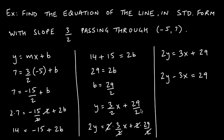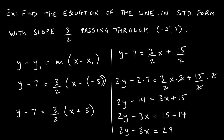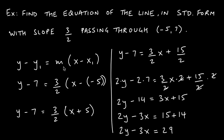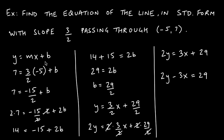To convert to standard form, move 3/2 x to the left to get y minus 3/2 x equals 29/2. Multiplying all three terms by 2 clears the fractions, giving 2y minus 3x equals 29 — exactly the same answer as when we used point-slope form. Whether you start with point-slope or slope-intercept form, you end up with the same equation.